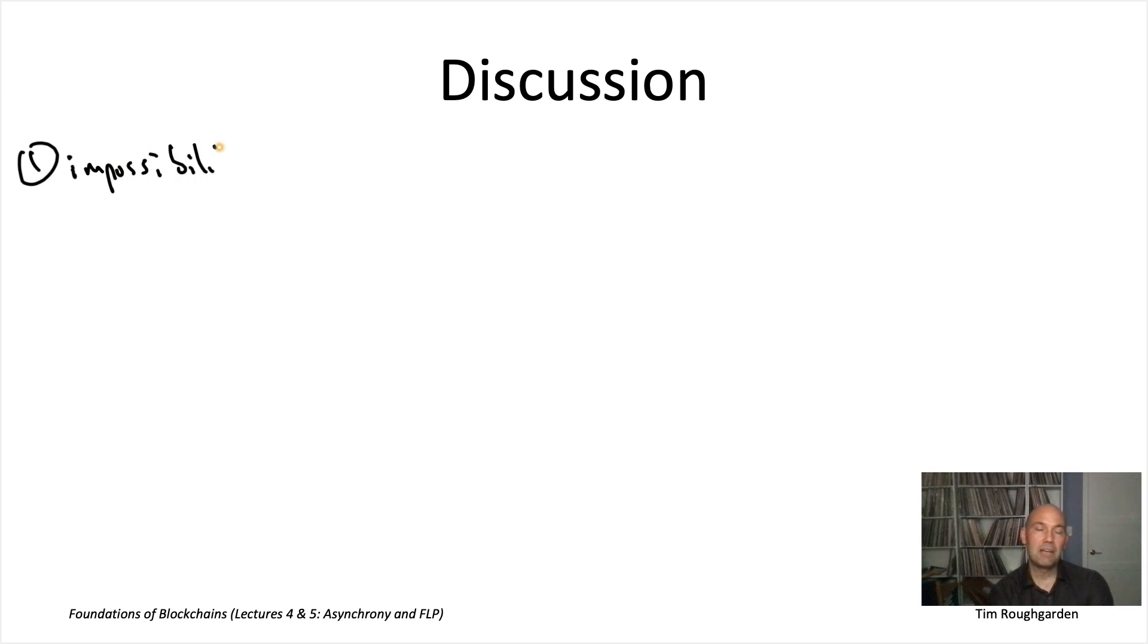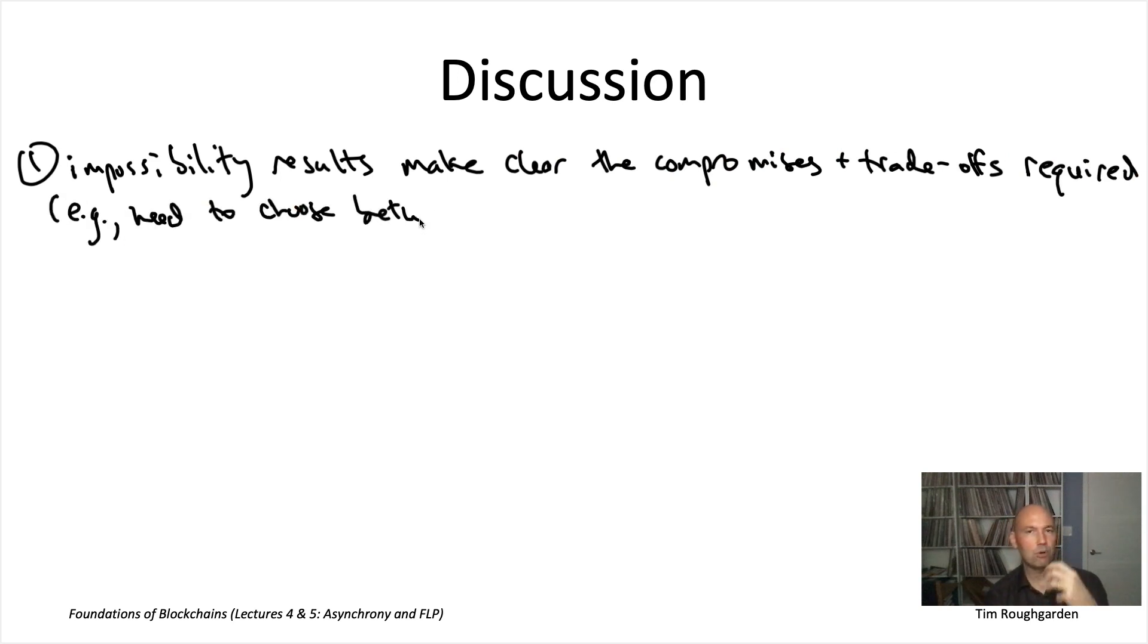Let me reiterate something I've said a couple times already, which is that the point of an impossibility result like this is not to discourage anybody from trying to come up with really cool consensus protocols or blockchain protocols. That's not the point at all. Rather, this impossibility result educates. It tells you that you can't necessarily have every single thing that you want out of your protocol. You have to make choices. You have to make compromises.